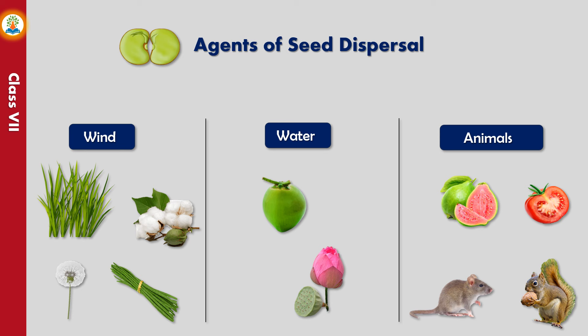Seeds like those of Xanthium have spines and get stuck to the body of animals or clothes of humans, and then get dispersed to distant places. Sometimes fruits of certain plants such as legumes, castor, geranium, peas, and acacia burst open forcibly after drying, and the seeds of these plants get scattered in all directions.